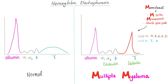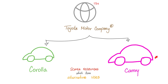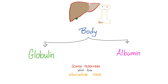Economics is the study of the use of scarce resources which have alternative uses. Imagine Toyota is making only Corolla and Camry. If the executive decides to make 10x more Corolla, the production of Camry is going to decrease — because resources like iron, steel, aluminum, plastic, rubber, and pistons are scarce and have alternative uses. Same thing in multiple myeloma: your body is making too much gamma globulin, so albumin production decreases. After all, you only have one liver.